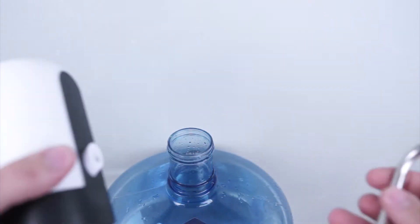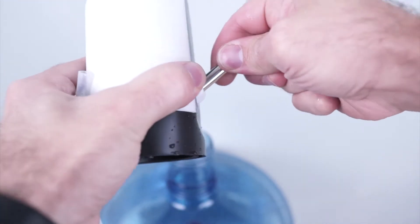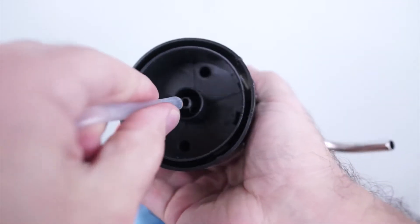Gently insert the metal water nozzle into the water pump assembly. Next, insert the flexible water tube into the bottom of the water pump assembly.